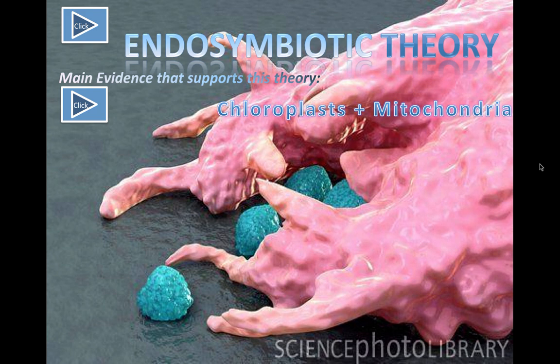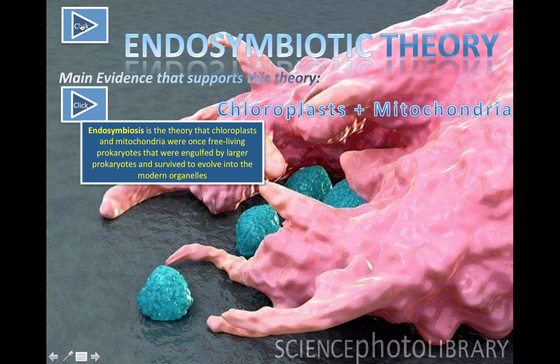One final idea about the origin of life is endosymbiotic theory. It supports the idea that two famous organelles — mitochondria, our powerhouses providing energy, and chloroplasts, the organelles in plants that perform photosynthesis — were once free-living prokaryotes. In other words, they were once bacteria that were engulfed and joined with larger prokaryotes, surviving to evolve into the modern organelles. Modern eukaryotic cells with mitochondria and chloroplasts are thought to be the result of this kind of symbiotic relationship.